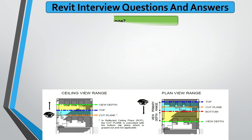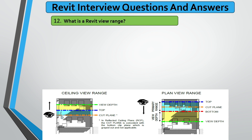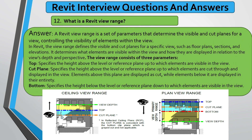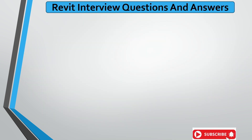The next question is: what is the view range in Revit? The view range is a set of parameters that determine the visible and cut plane of the view, controlling the visibility of elements within views. There will be a top plane, a cut plane, and a bottom plane. An image is shown here to illustrate this. It helps control what is visible at different levels.